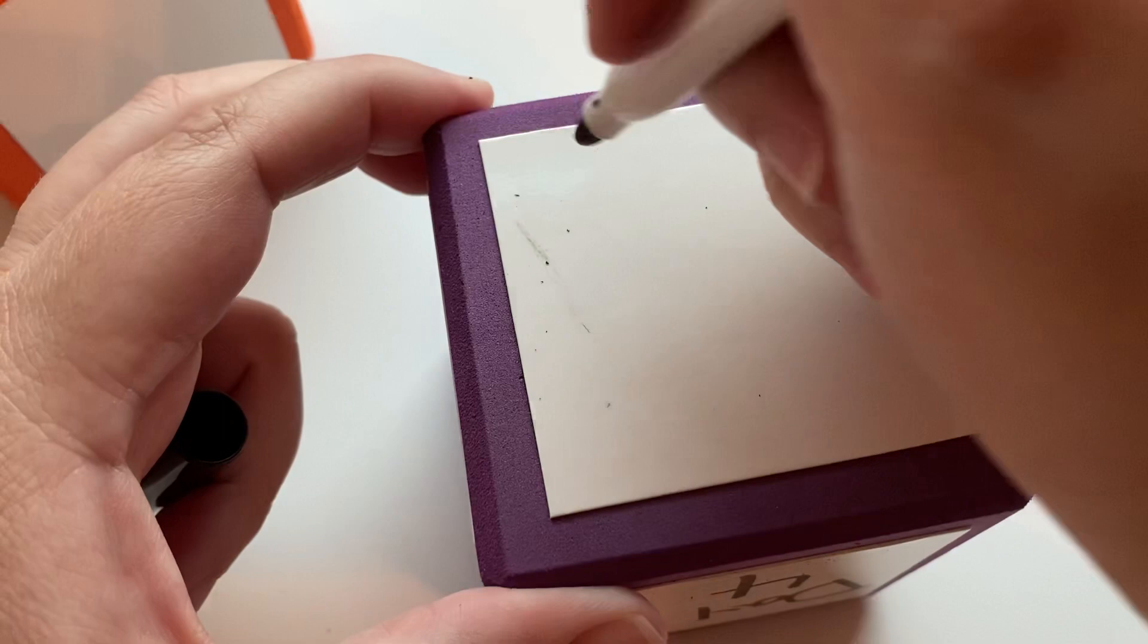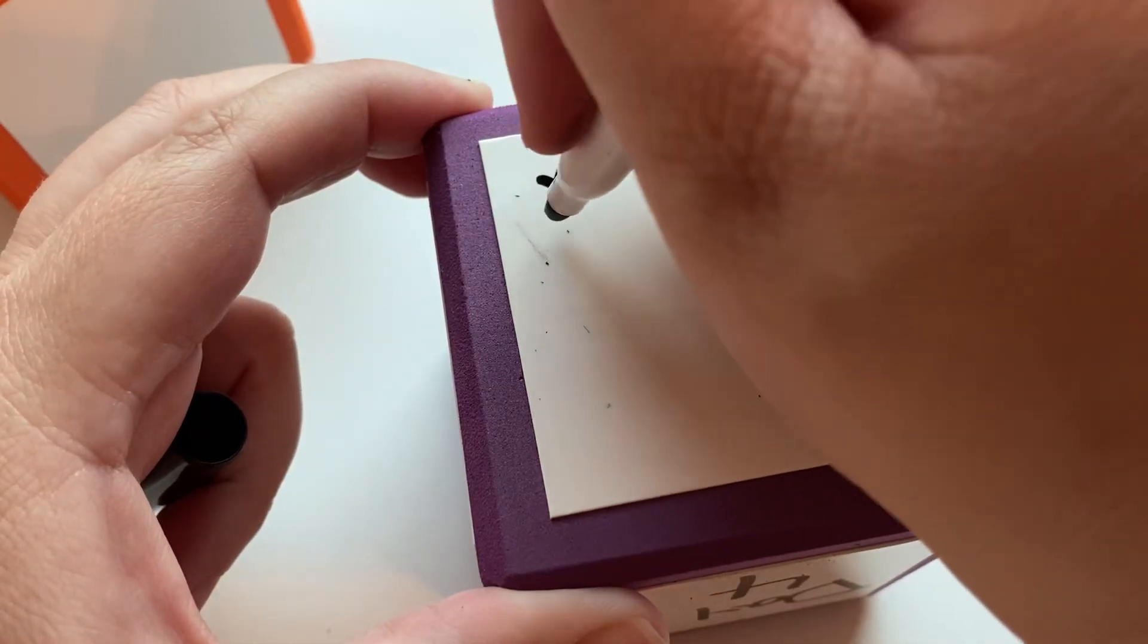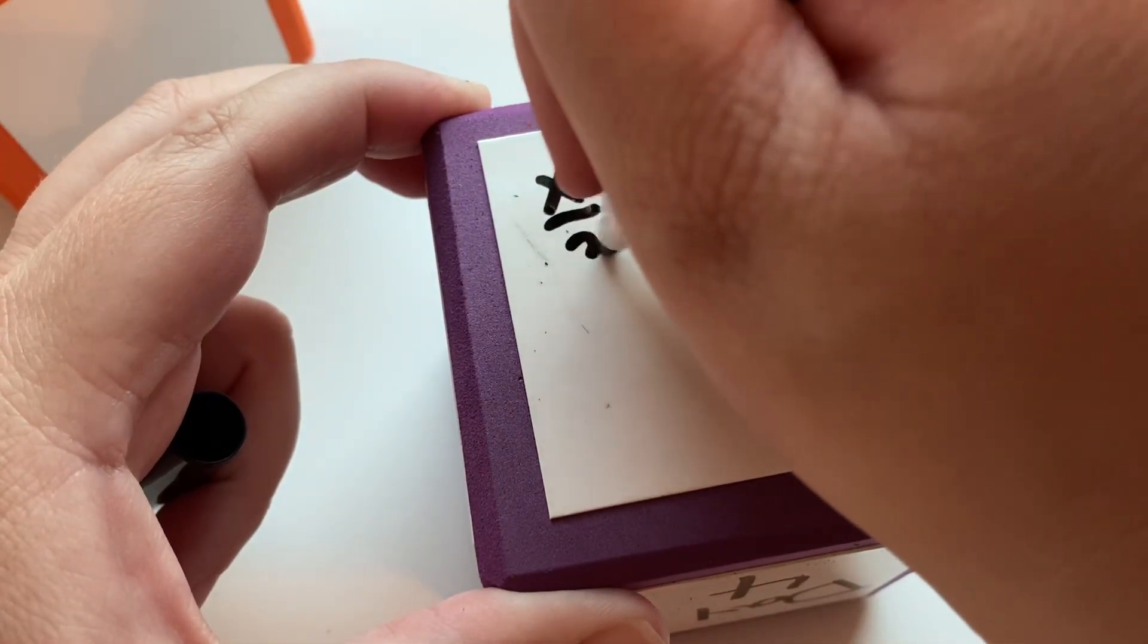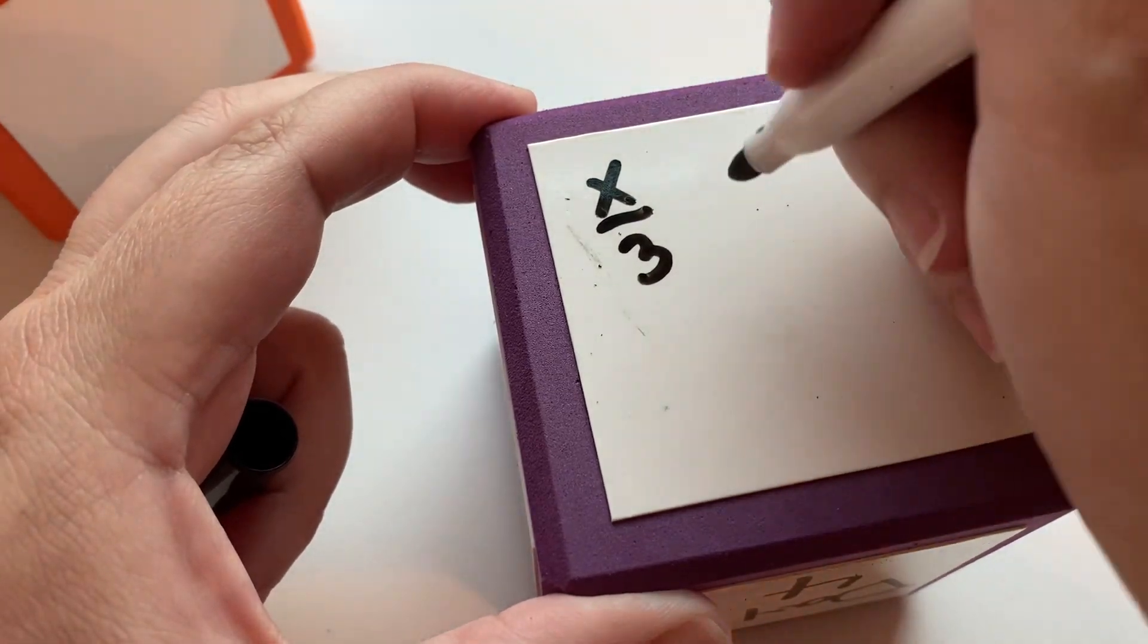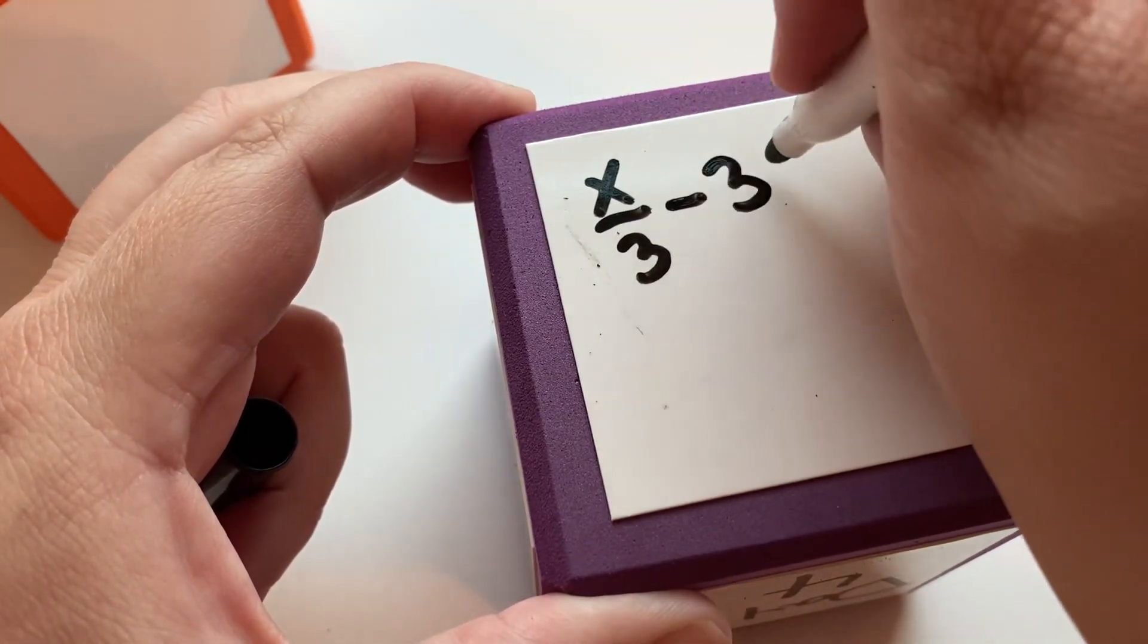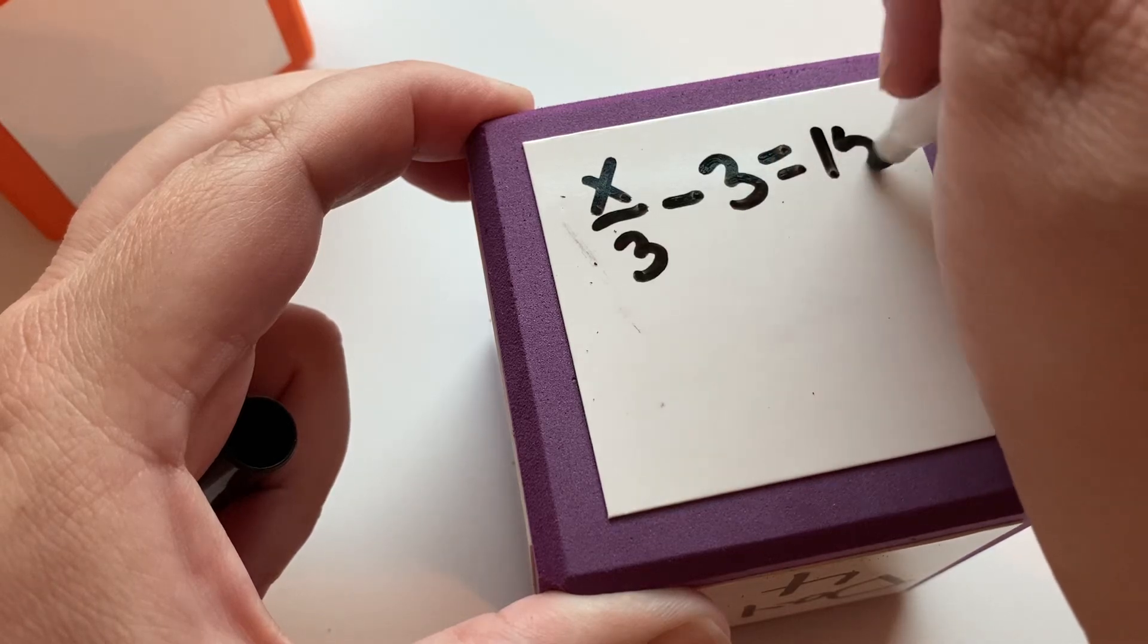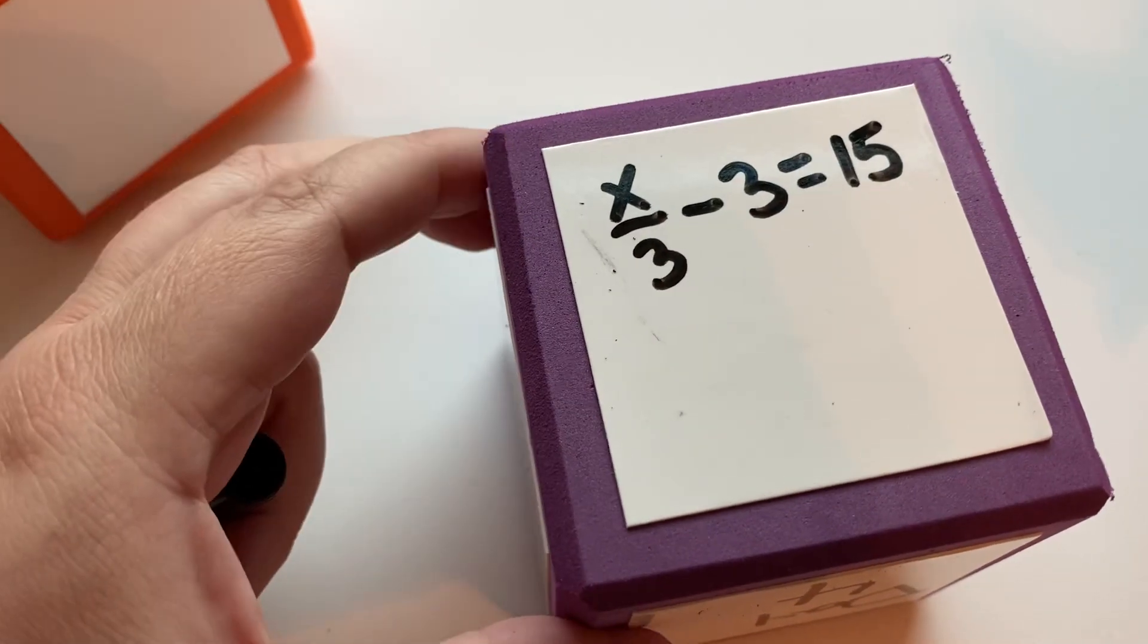Today our problems are going to have division, like x divided by 3, and then they're going to have subtraction. So they're going to look something like this.